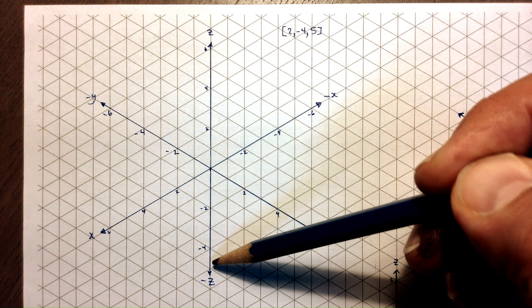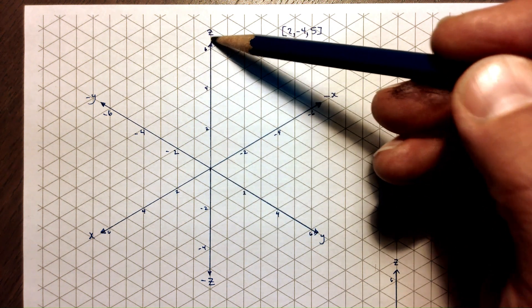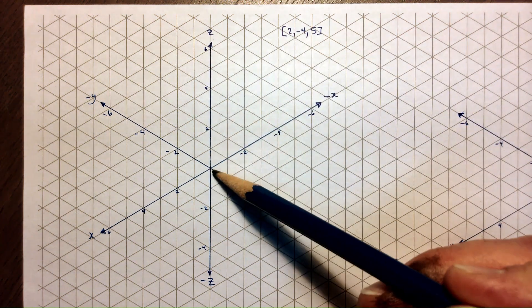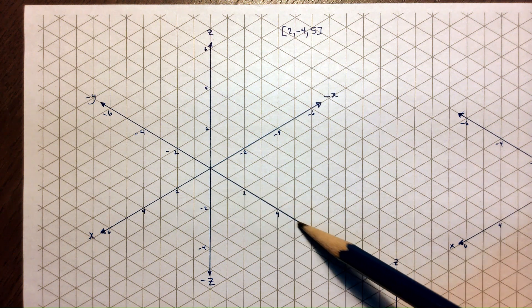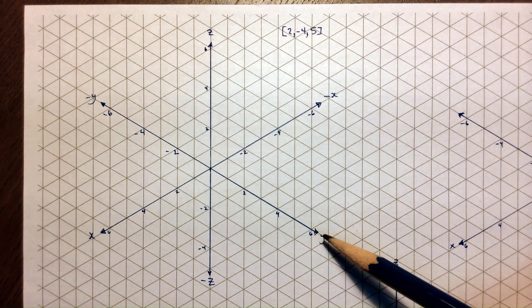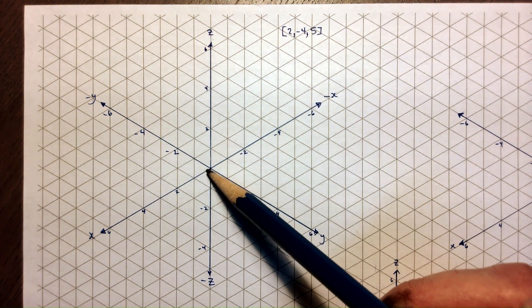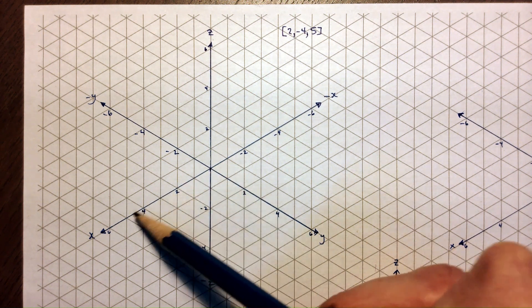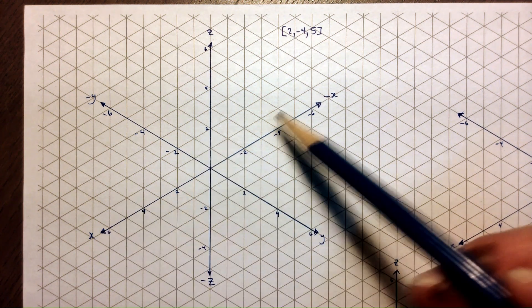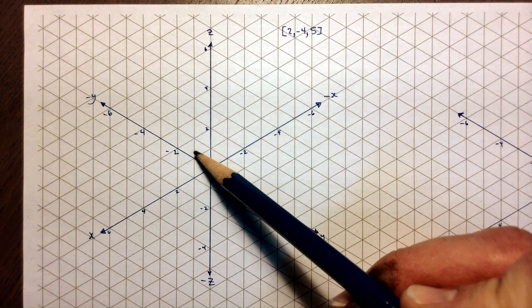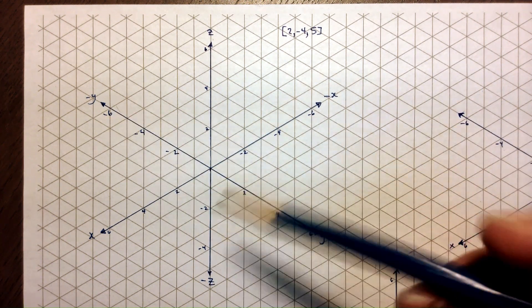The vertical line is our z-axis and the positive goes up from the origin. The y-axis goes downwards to the right, the positive y-axis, and the positive x-axis goes downwards to the left. And you can see the negative x-axis is here, negative y, and negative z.